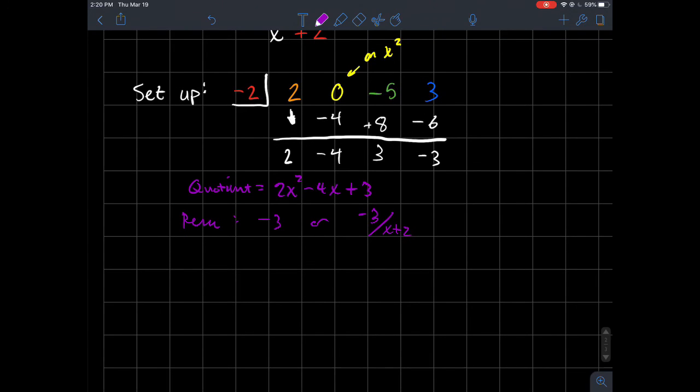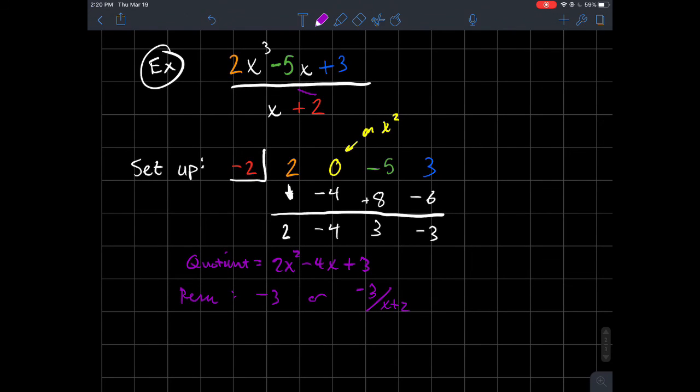So just be careful, again, identifying the correct c here. And then also, if you notice you skipped over a power of x, then yes, you need a 0 as a placeholder.